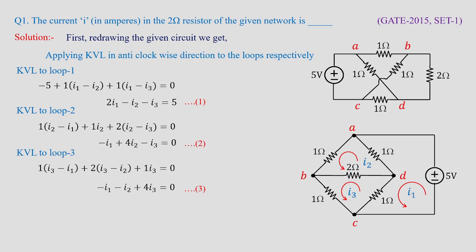Please confirm in the chat box whether you are able to frame these three equations. After solving three equations with three unknowns, we get I1 = 3.75 A, I2 = 1.25 A, and I3 = 1.25 A. The requirement is to find the current in the 2 ohm resistor. The branch current traveling from B to D is I2 − I3 = 1.25 − 1.25 = 0 amperes. Therefore the voltage is also 2 × 0 = 0 volts. This is the solution for GATE 2015 Set 1.